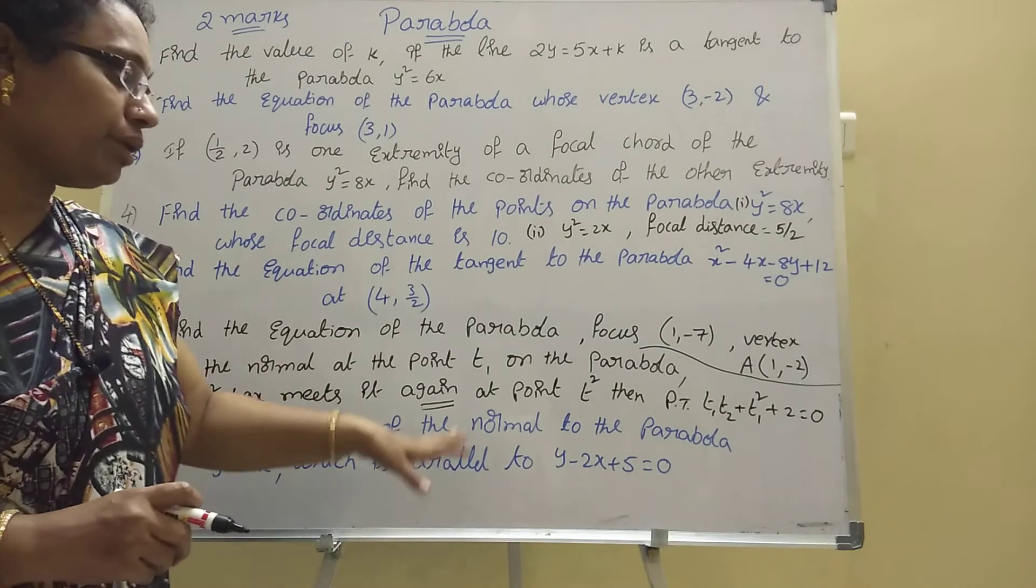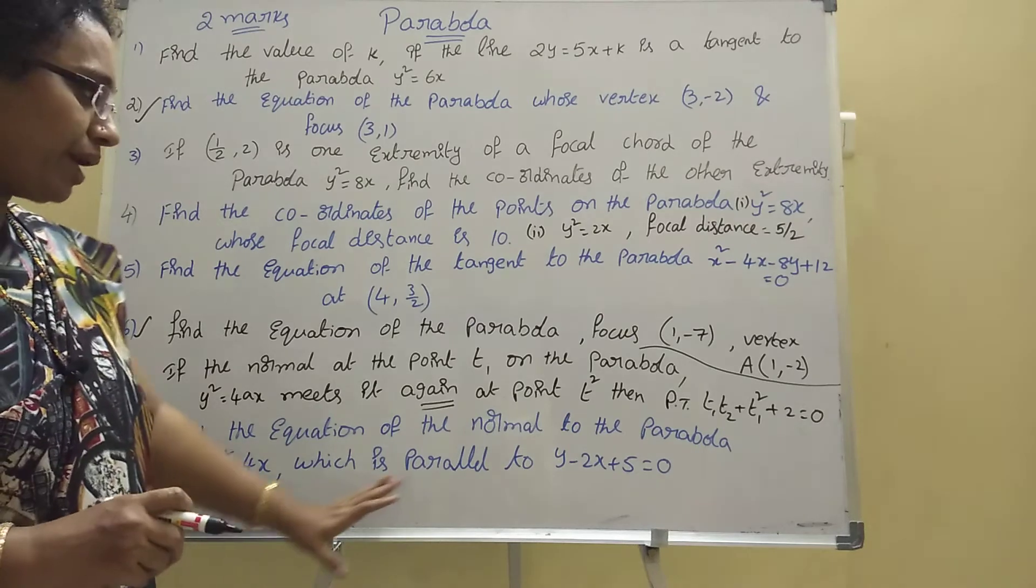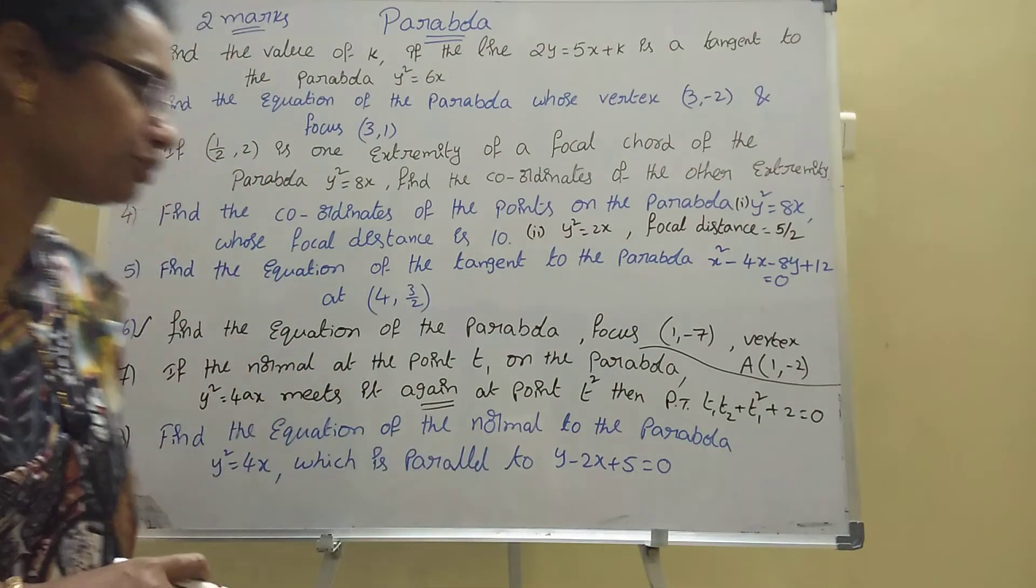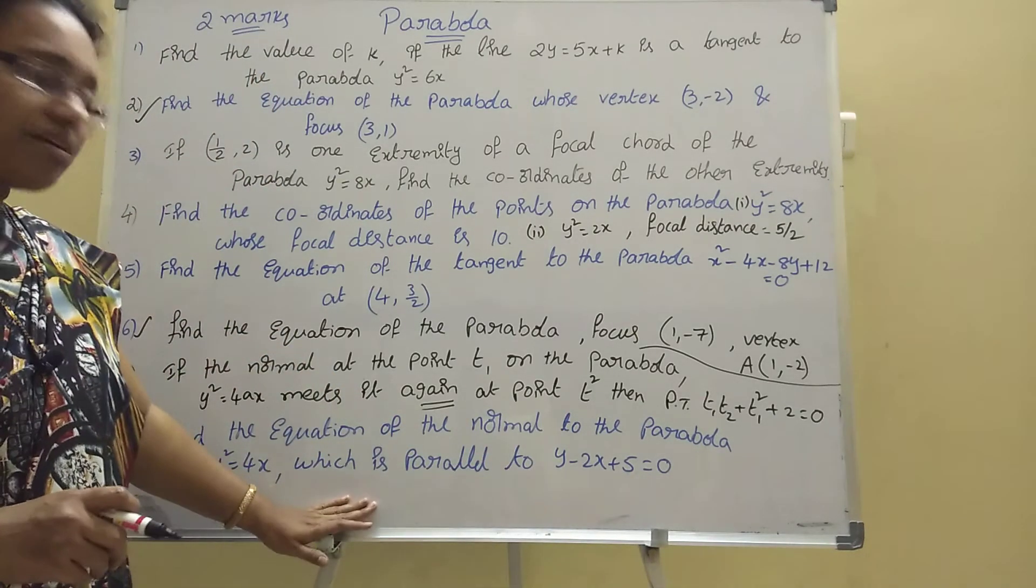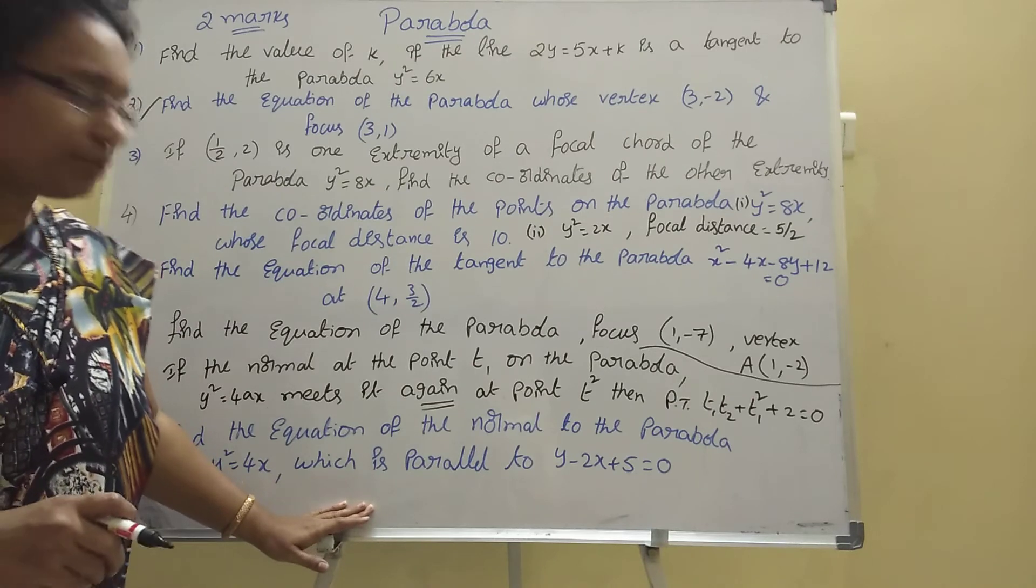Eighth one: find the equation of the normal to the parabola y² = 4x which is parallel to y - 2x + 5 = 0. This eighth one is the last one for Telangana people.